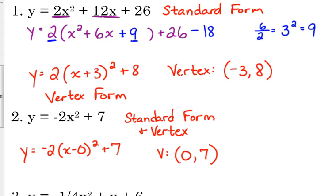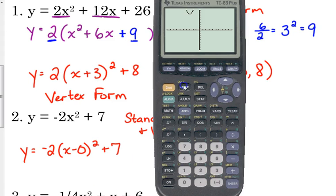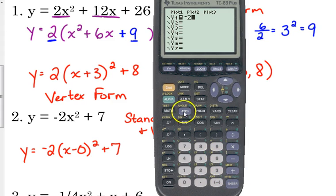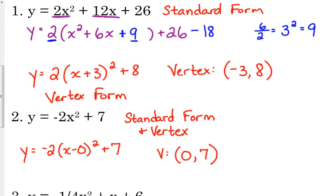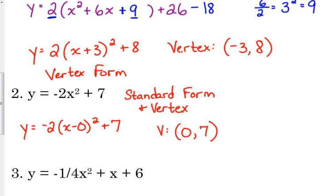So when there's no x term, just plain x, then the x coordinate of your vertex is 0. And we can confirm this. We can plug it in and graph it and look at it and see that the vertex is on the y-axis. So 0, 7 is our vertex.